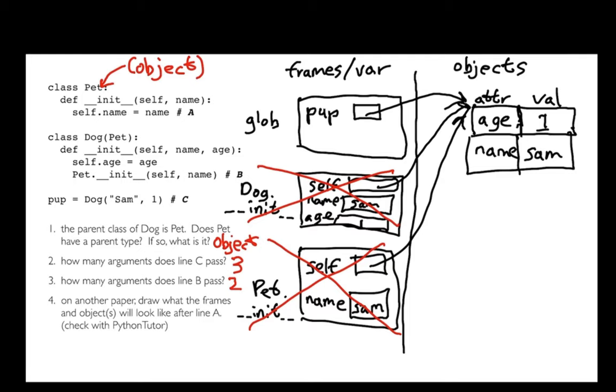What's helpful, when you're confused about objects or classes, is to draw a picture like this, and then run the code in Python Tutor and see if you get the same thing. That's a good way to check your mental model.